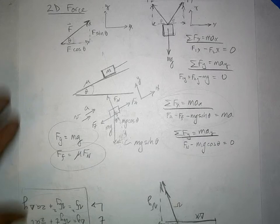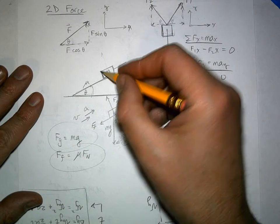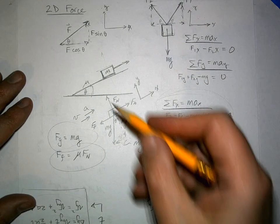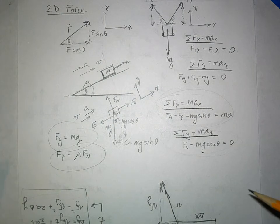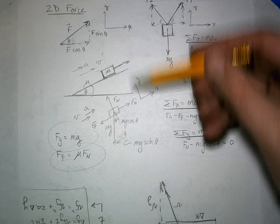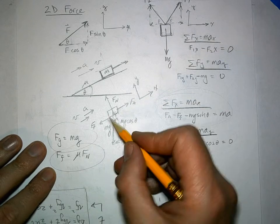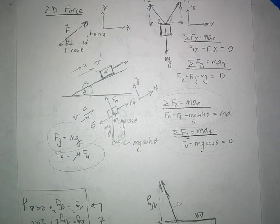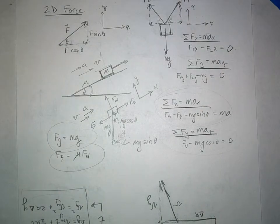The other kind of problem is an incline plane problem. We have an incline at angle theta, maybe with friction, a mass on it, and we might be pulling it up. Maybe it's moving up, accelerating, or slowing down — it depends on the problem. You draw the free body diagram: gravity pulls straight down, there's an applied force, friction, and a normal force. Be careful — an applied force only exists if someone is physically pulling or pushing on the object.